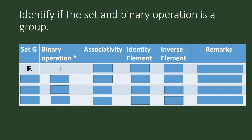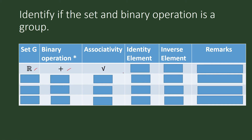We shall identify if the set and binary operation given in this table form a group. We have the set of real numbers and the binary operation of addition. Is it associative? Yes — check. Does it have an identity element? Zero is the identity element, so yes. How about an inverse element? For any real number, does it have an inverse in the set of real numbers under addition? Yes.